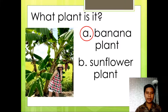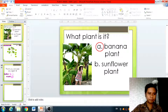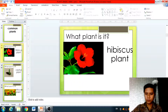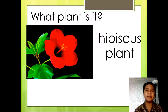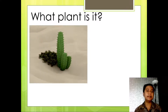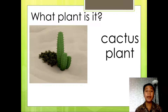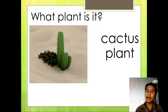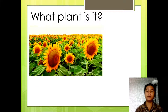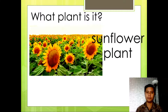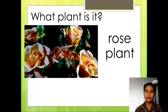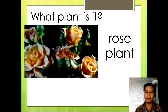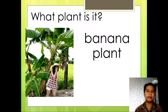Let's try to review. This one is what we call hibiscus plant — everybody say hibiscus plant. And then this plant is what we call cactus plant. This plant is what we call sunflower plant. And this plant is what we call rose plant. And the last one, this plant is what we call banana plant.